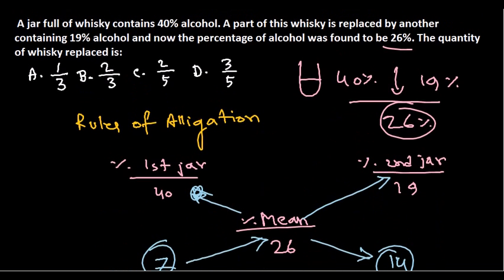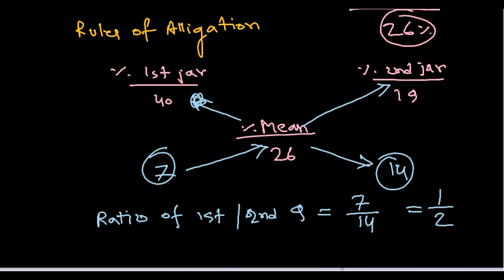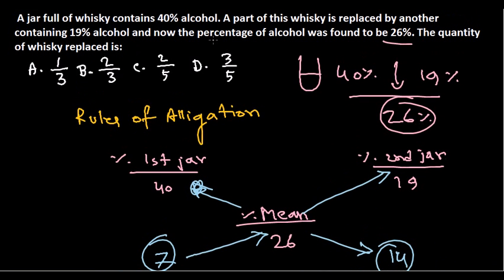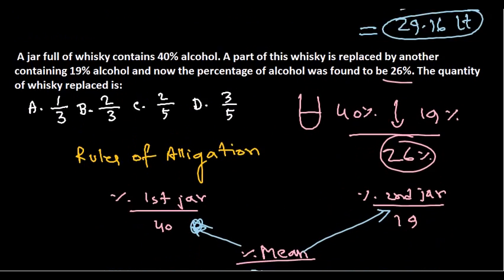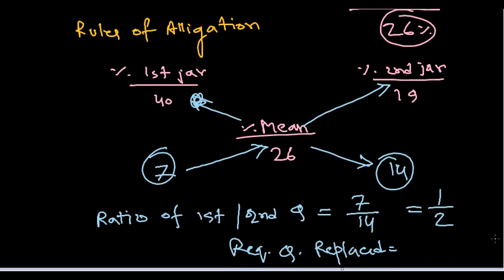The amount of whiskey replaced from this jar — if you look at the ratio, it is 2 to 1 in terms of the percentage values. So the required quantity that is replaced is 2 by 3 of the total.